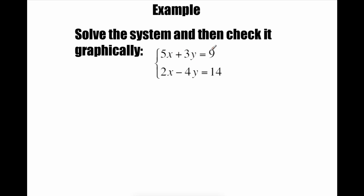Taking a look at this one: we've got 5x + 3y = 9 and 2x - 4y = 14. These equations don't have any variables with opposite coefficients, so we're going to have to make some changes. I'm going to focus on the y variables because one is positive and one is negative, but we need to get the same number in front of them — like a least common multiple idea. So I'm going to take the top equation times 4 and the bottom equation times 3, which will give us a 12 in front of the y — one positive, one negative — so they'll cancel out.